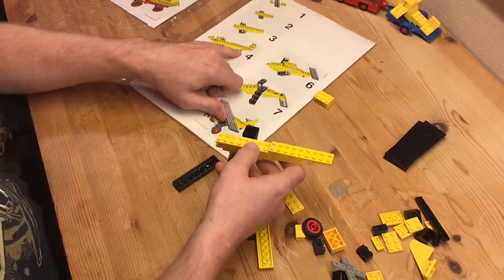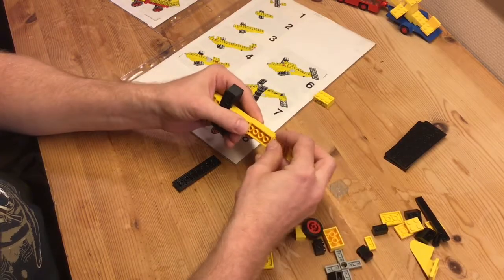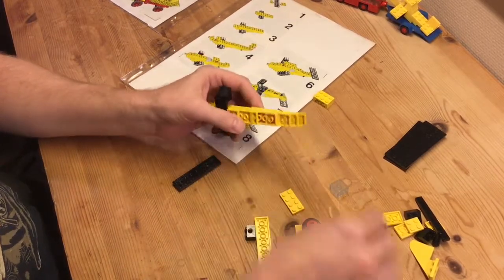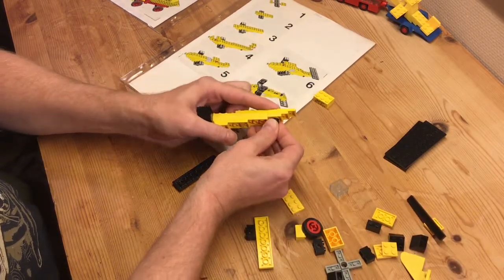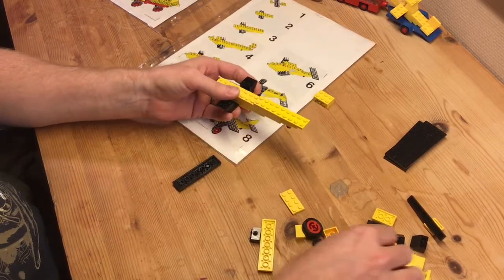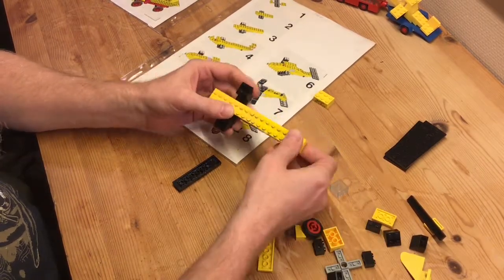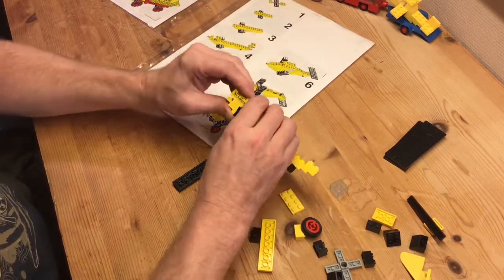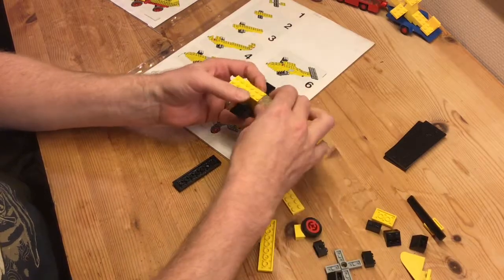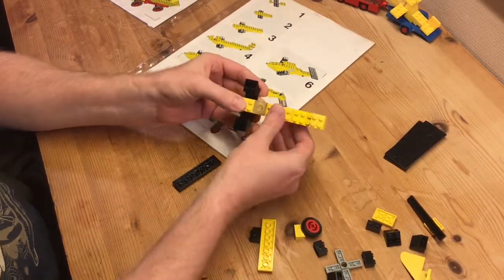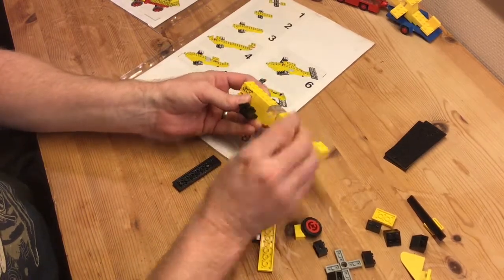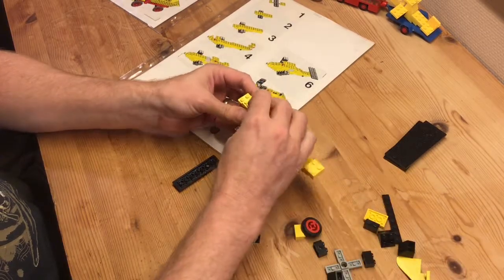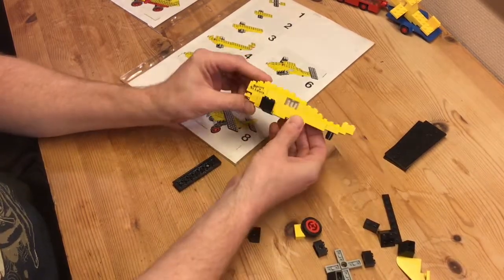There. Now we need the part below the tail. Like that. And also this one. There we go. Two. There we go. Two knees. There we have it. And the cockpit.